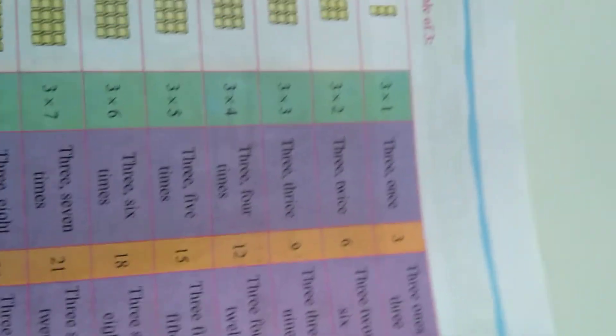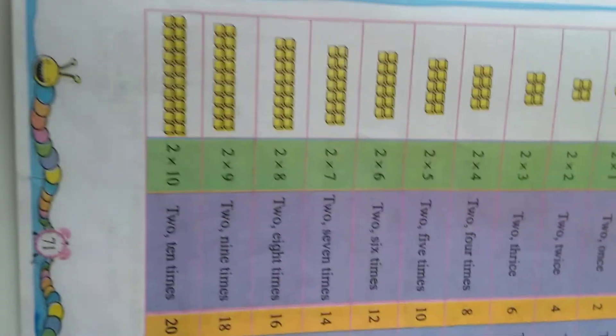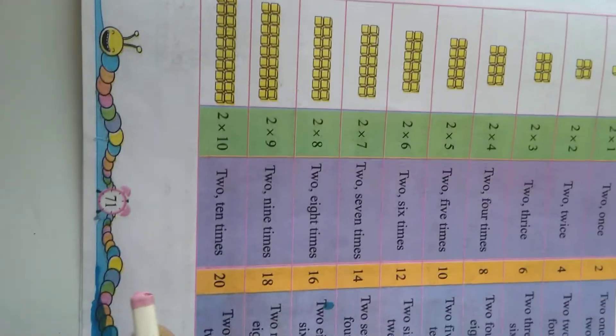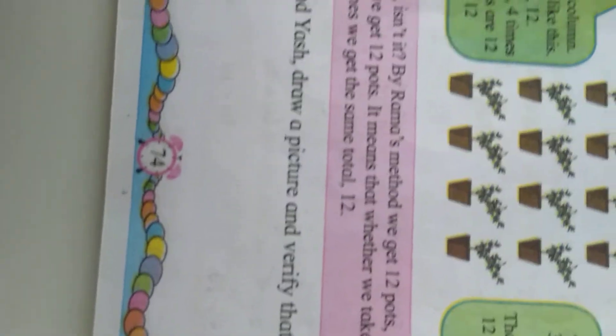Hello children. Here we are going to learn. Let us make a table. It is page number 71, 72 and 73 is completed. Now page number 74. See here.